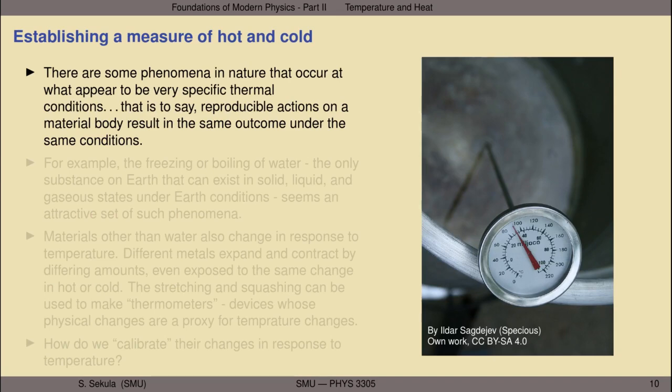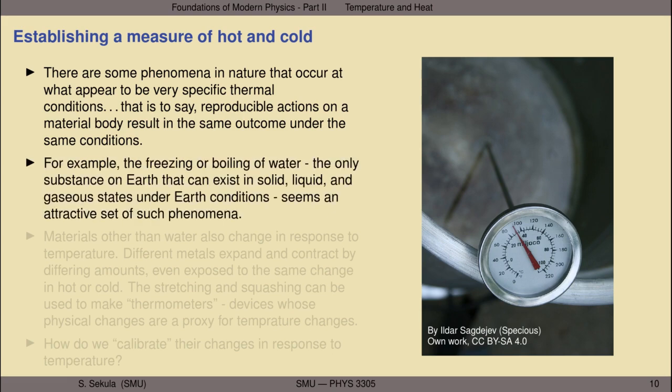Let us begin by establishing a measure of hot and cold. Consider the world around you. There are some phenomena in nature that appear to occur at very specific so-called thermal conditions. That is to say, if you could reproduce the environmental conditions under which a particular phenomenon occurs, that phenomenon would occur repeatably, reproducibly, reliably. For example, the freezing or boiling of a body of water.